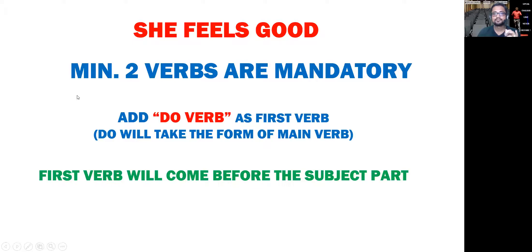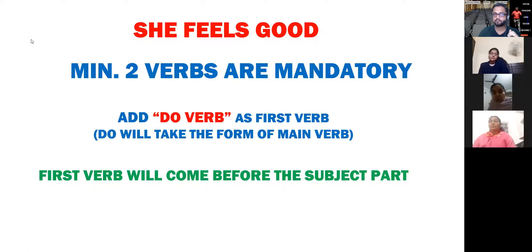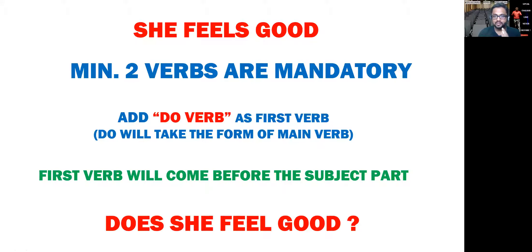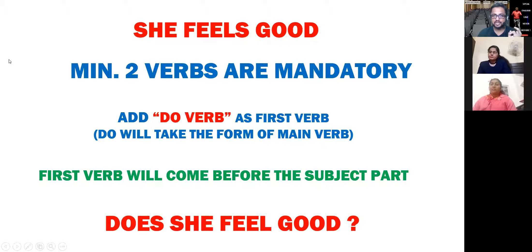So the sentence becomes 'She does feel good.' Feels नहीं आएगा, क्योंकि do के बाद कोई भी verb बैठता है तो वो mother form में होता है। So the sentence now has two verbs: 'she does feel good.' अब दो verb आ गए — पहला वाला verb 'does' subject part के पहले आ जाएगा। So the sentence becomes: 'Does she feel good?' Does कहाँ से आया? Does एक extra verb था जो आया — क्योंकि ऊपर 'feels' था, इसलिए 'does' आया। So sentence हो गया: 'Does she feel good?' with sign of interrogation.